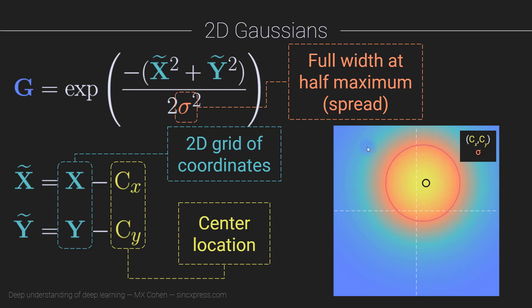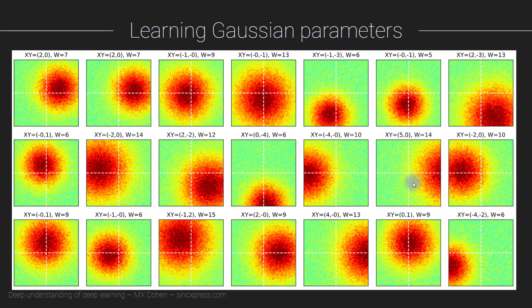For every image we can identify three parameters: the two center locations cx and cy, and the sigma parameter controlling the width. Here you see examples of different noisy Gaussians. Our goal is to develop a convolutional neural network that takes the image as input and returns these three key parameters — the x and y location and the sigma width of the Gaussian.